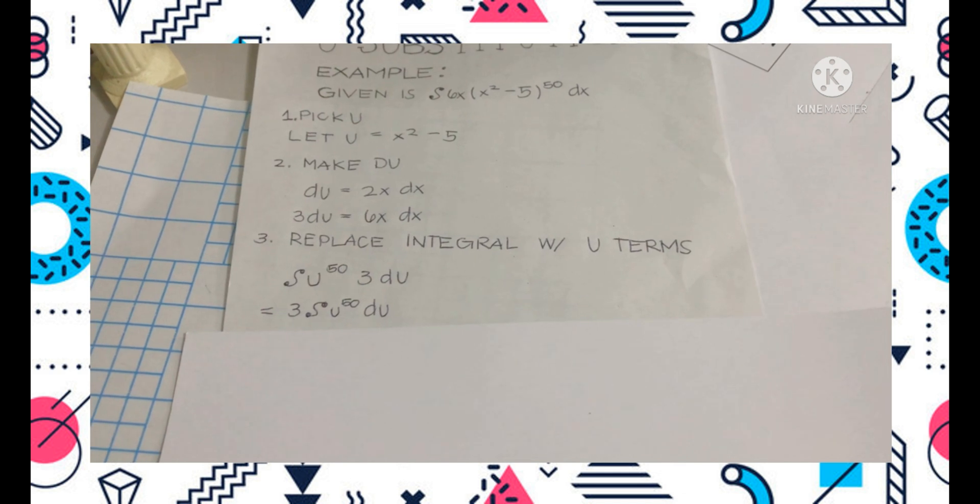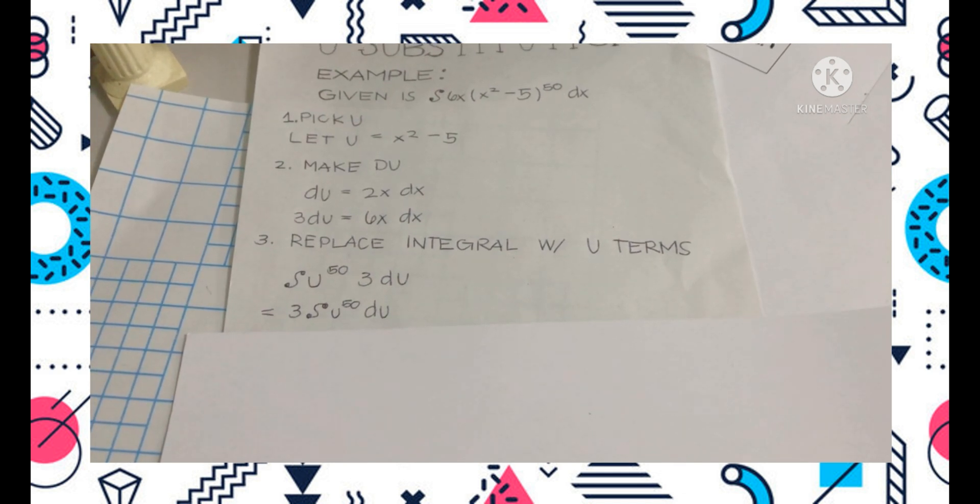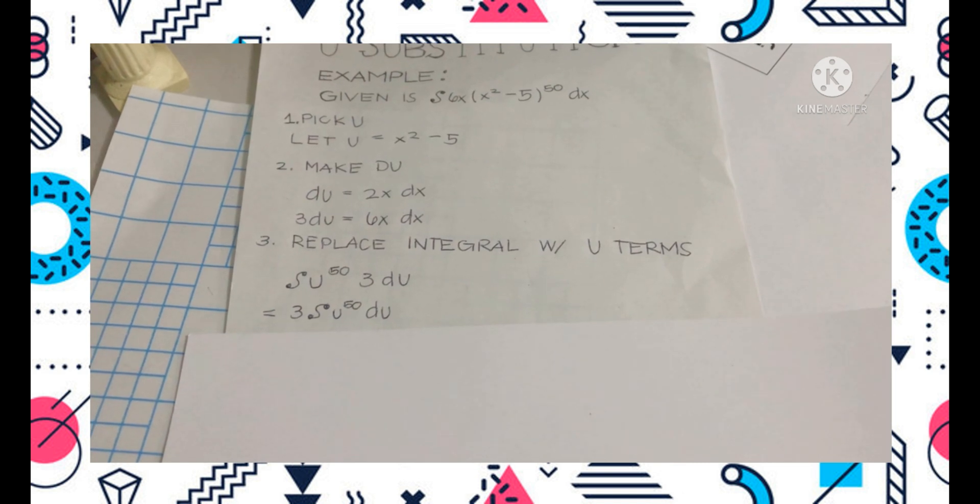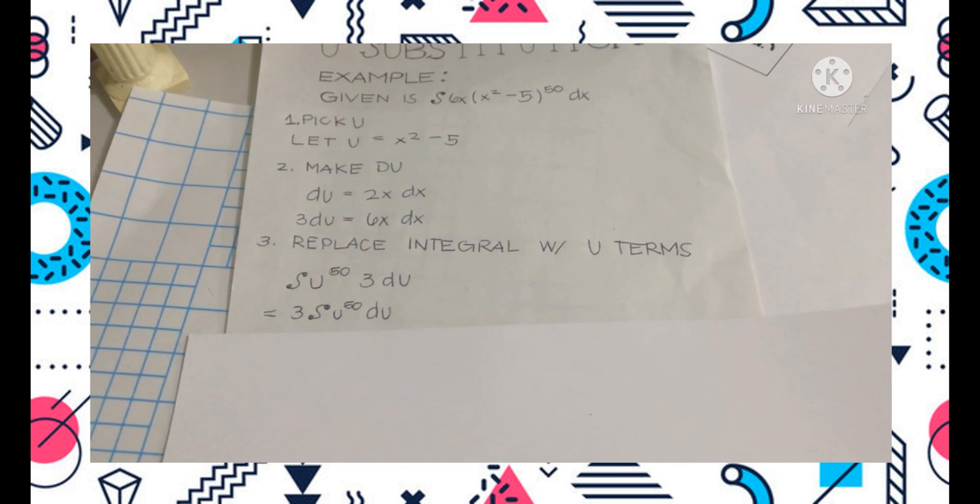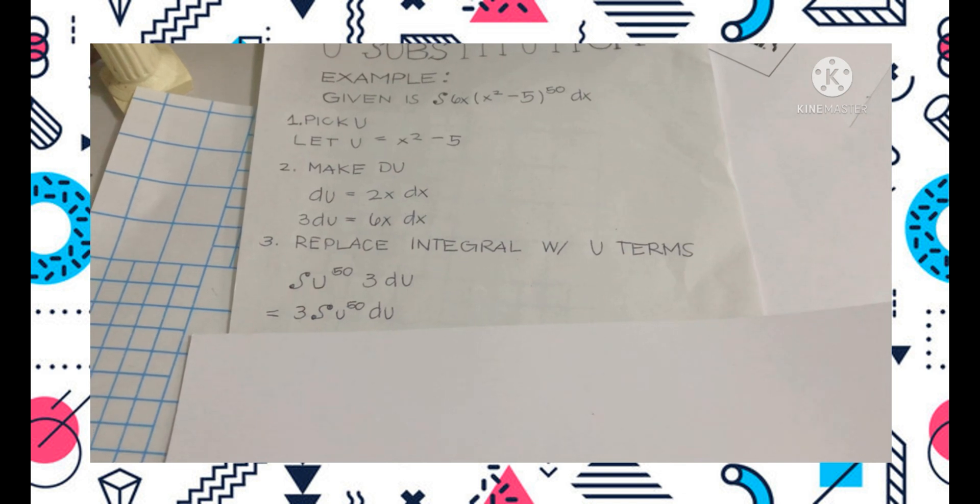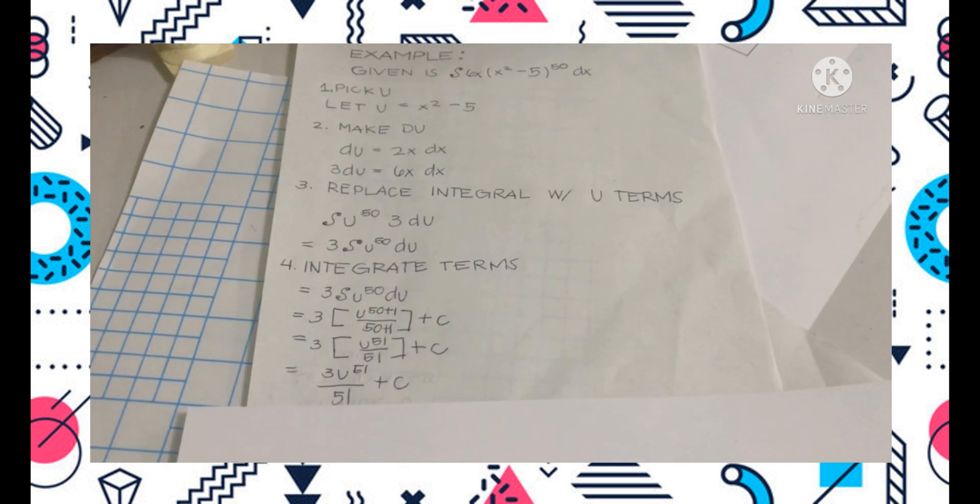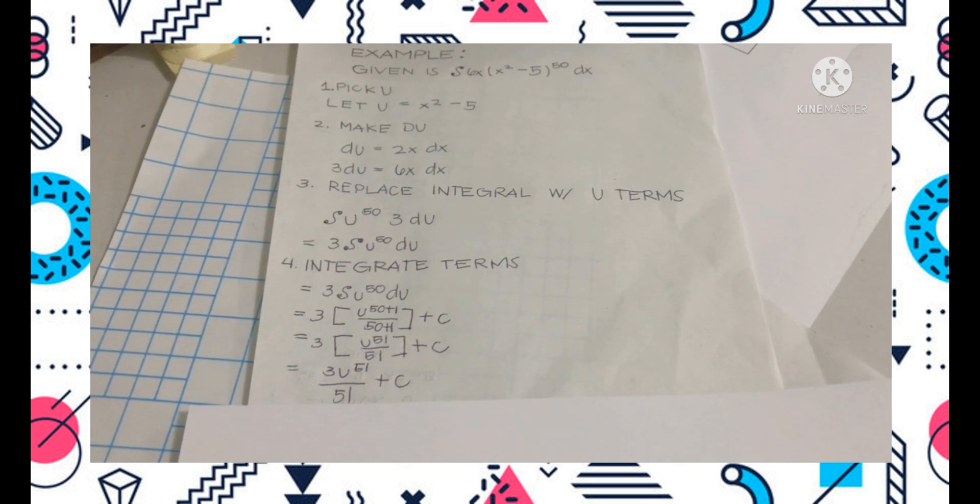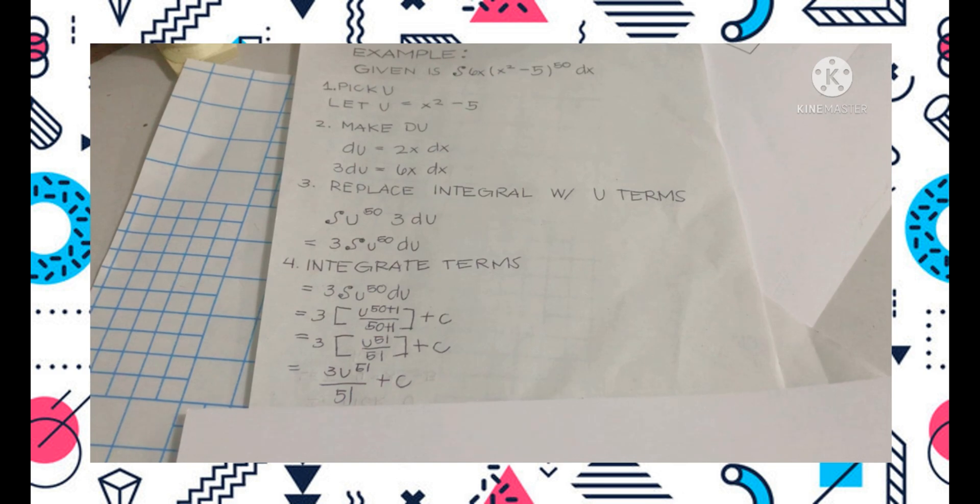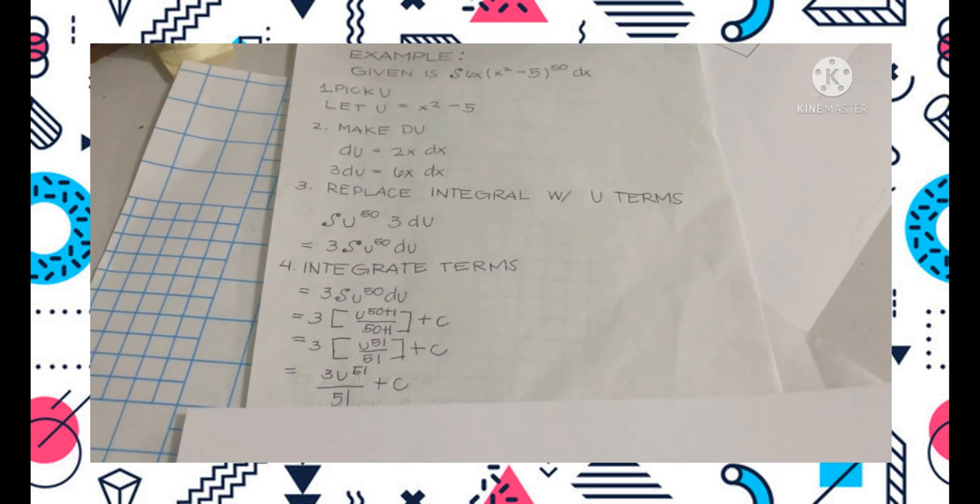In the given, we can replace it as integral of u raised to 50, close and open parenthesis, 3 du. We can put the 3 outside the integral. Since we have 50 exponent, we will add 1 at the numerator and denominator. Don't forget to add the constant or plus c.